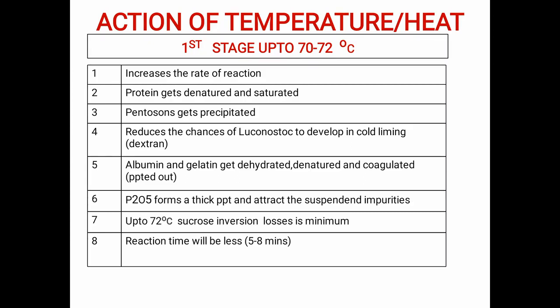Third, pentosans get precipitated. Fourth, it reduces the chances of Leuconostoc (Leuconostoc mesenteroides) developing in the cold line. If Leuconostoc is present in the juice, it will form dextran — a polymer of glucose. This reduces the sugar content in the juice by polymerizing it into dextran, which is a gummy substance that chokes tubes, heat exchangers, and lines, causing many problems.